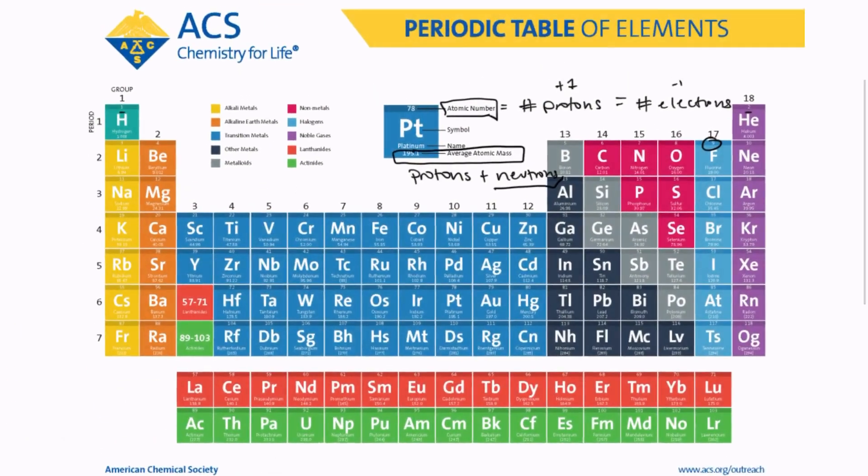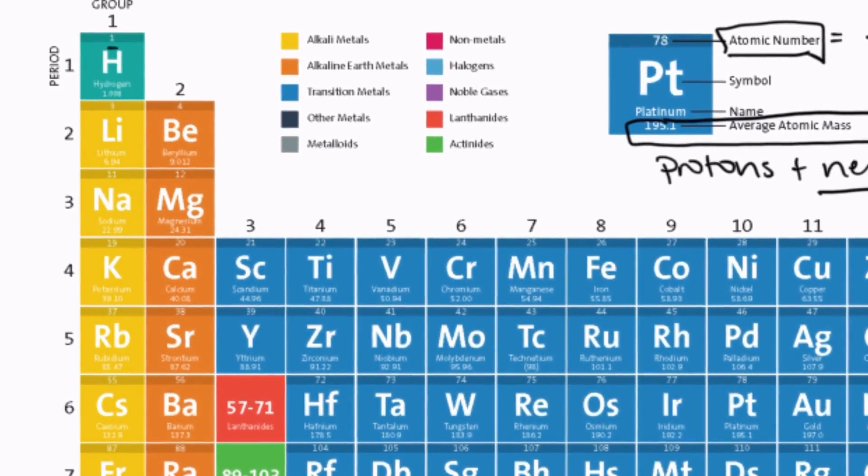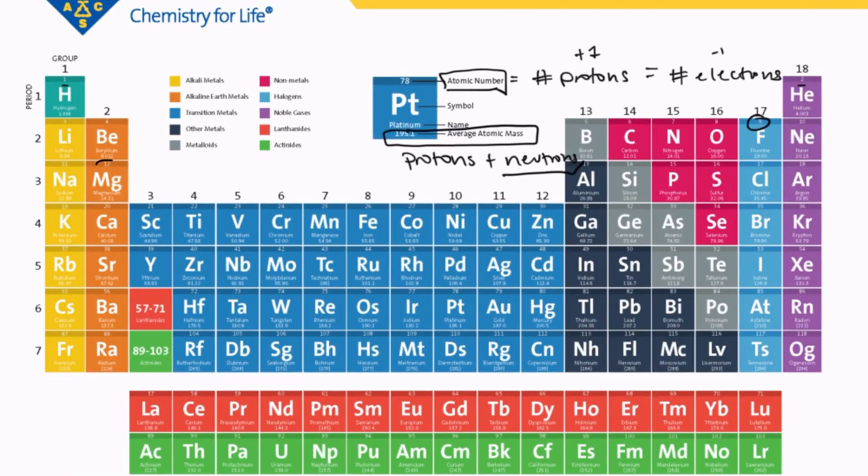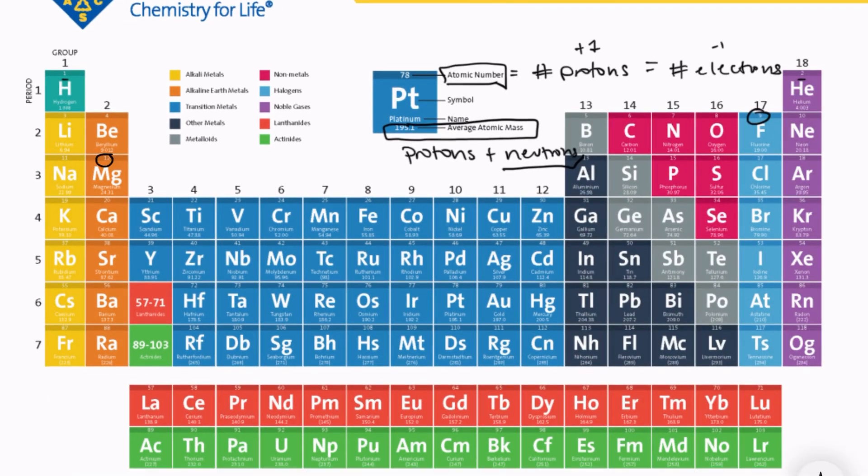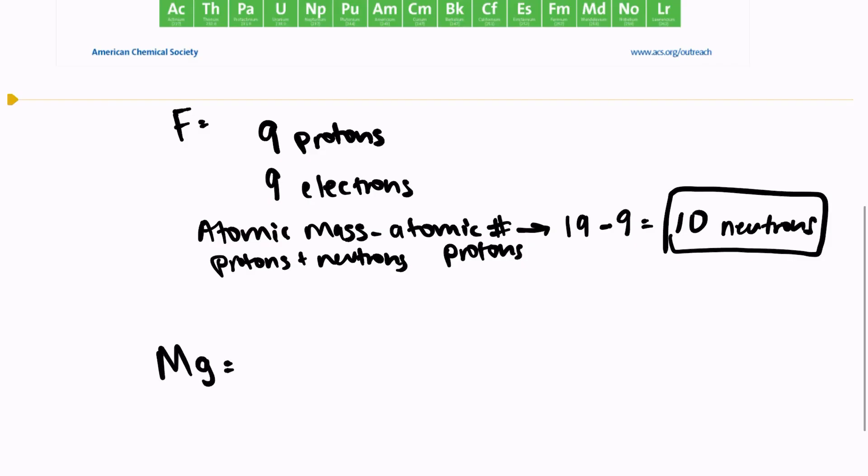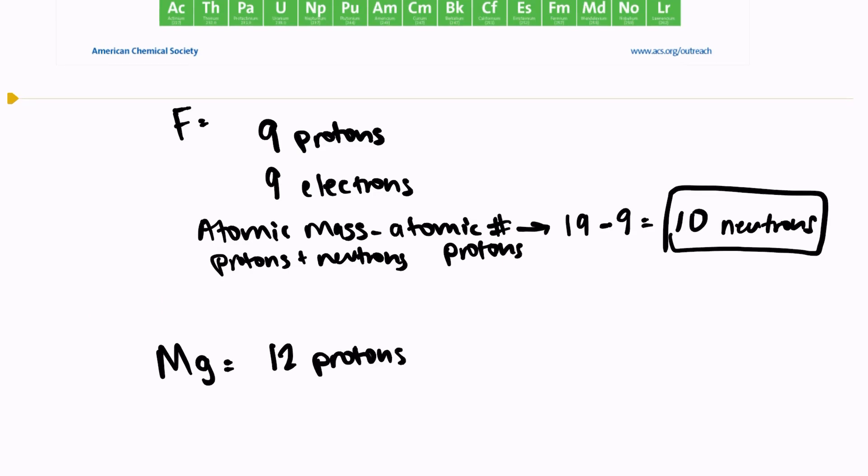Let's try another example together. Let's look at magnesium. Magnesium has an atomic number of 12 and an atomic mass of 24. So magnesium would have 12 protons and 12 electrons because the atomic number is 12 and it's a neutral atom. And the number of neutrons would be equal to the mass minus the number of protons, which would actually also be 12 in this case.